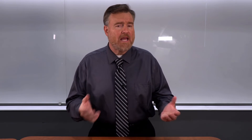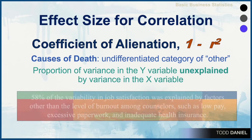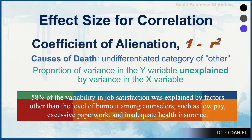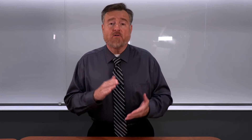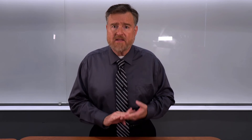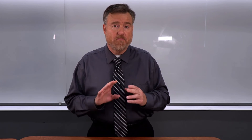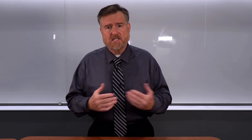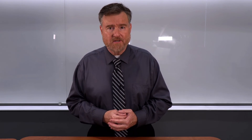If we were writing this up for an APA-style report, we might write something like this: 'Fifty-eight percent of the variability in job satisfaction was explained by factors other than level of burnout among counselors, such as low pay, excessive paperwork, and inadequate health insurance.' Using the coefficient of determination for effect size and the coefficient of alienation helps us to better understand the predictions that we're making with our correlational model.